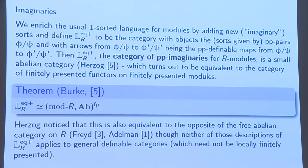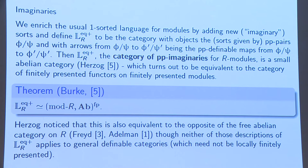It turns out this category is equivalent to the category of finitely presented functors on finitely presented modules. Mod R (with capital M) is a locally finitely presented category, and you're taking the finitely presented pre-sheaf category — this is really just the pre-sheaf category with Ab instead of Set, because we're in the additive world. You're taking the finitely presented pre-sheaves on the finitely presented objects.